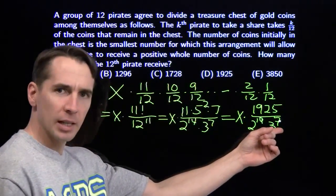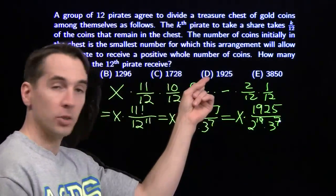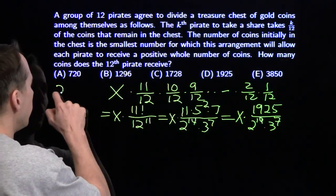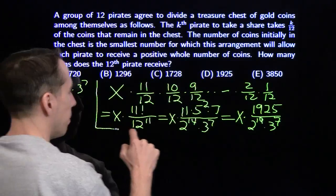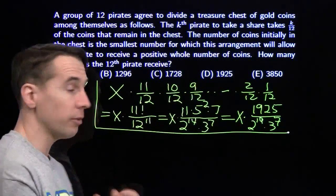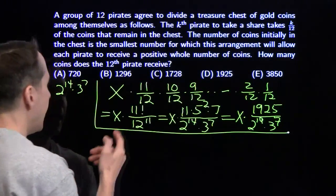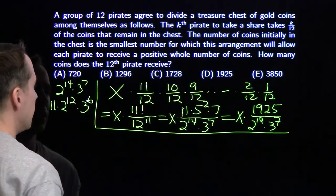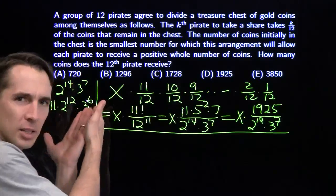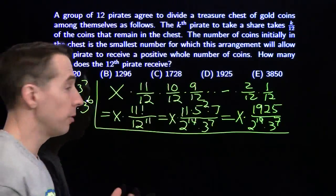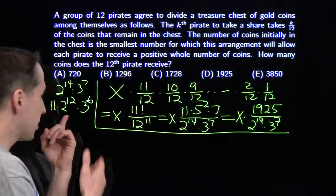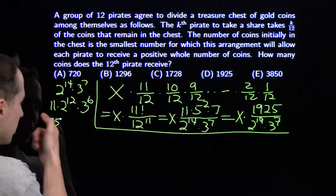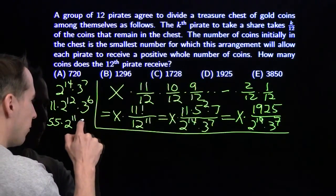Starting with 2 to the 14th times 3 to the 7th coins, we want to confirm we end up with 1925 at the end and that each pirate gets a whole number. The first pirate takes 1/12 — that works out fine — leaving 11 times 2 to the 12th times 3 to the 6th. We're chipping away at the powers of 2 and 3. The second pirate takes 2/12 (one sixth), leaving 5 sixths, which introduces a factor of 5 but removes another factor of 2 and 3.